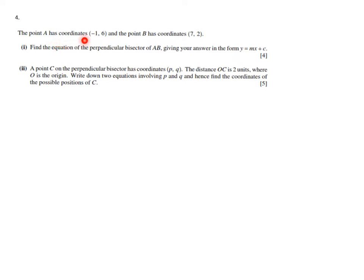So what's going on? It says point A has coordinates (-1, 6), and point B has coordinates (7, 2). So before we start, let's just plot that very quickly, make a sketch. I think you have a rough idea of what is going on. (-1, 6), so let's say that's over there. Point A.